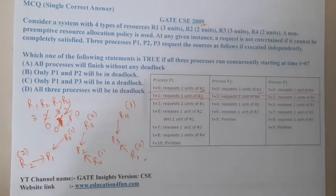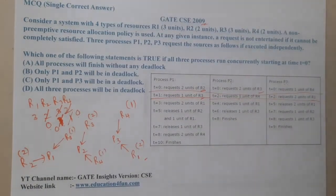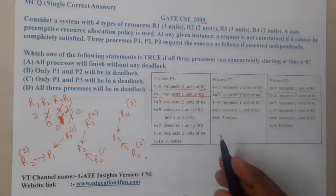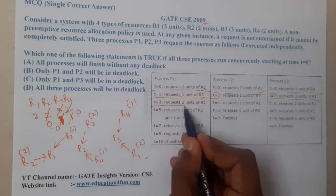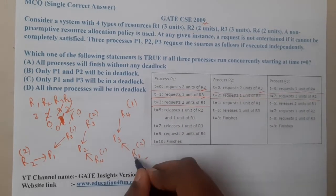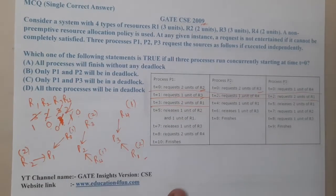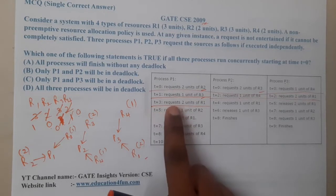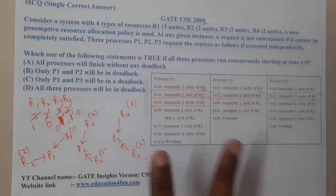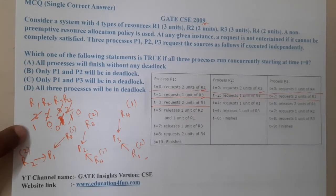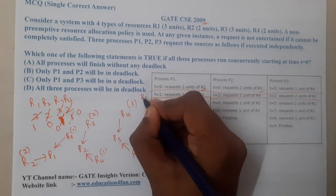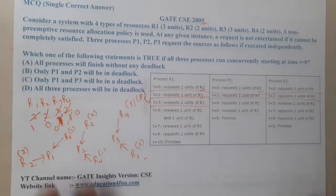Now the current time is t3. At t3, P1 is requesting 2 units of R1. However, observing our available resources, we do not have 2 units of R1 available. So we cannot execute this step — we pause P1's t3 request for now and continue.